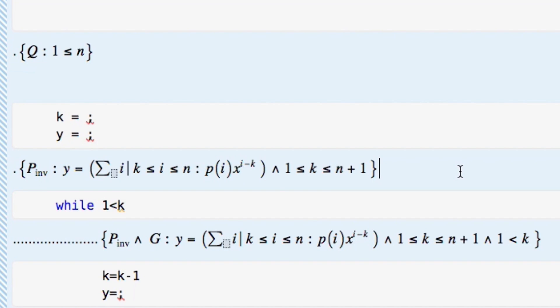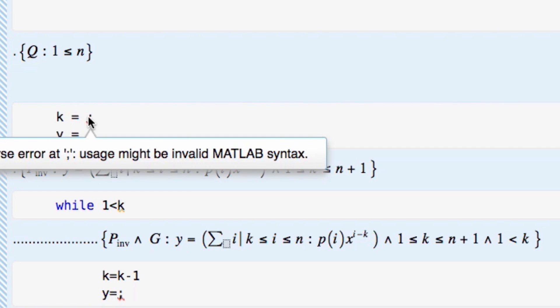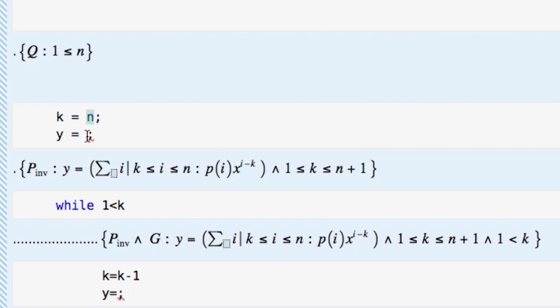Notice that as part of the exercise, we pointed out that the initialization is not unique. And the one that we're going to pick here is that k is equal to n, which means that y is equal to p of n as our initialization.